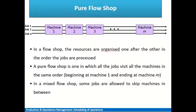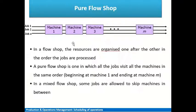There is also a mixed flow shop concept, in which it may not be necessary for a particular job to be processed by every machine. For example, a job after processing on machine one may be directly assigned to machine three, skipping machine two. When some jobs flow in sequence through all machines and some skip machines in between, that is called a mixed flow shop, contrasted from a pure flow shop where all machines in sequence are involved in processing every job.